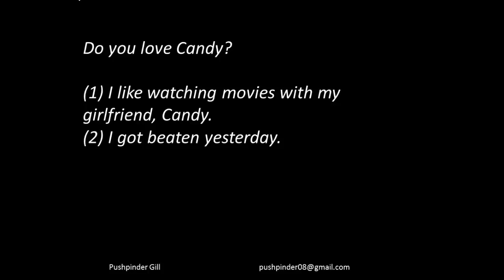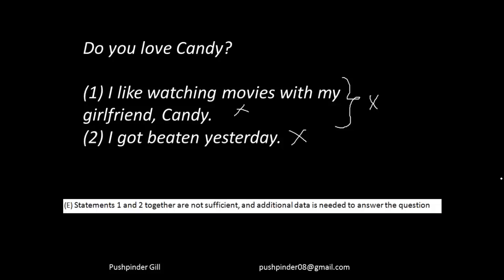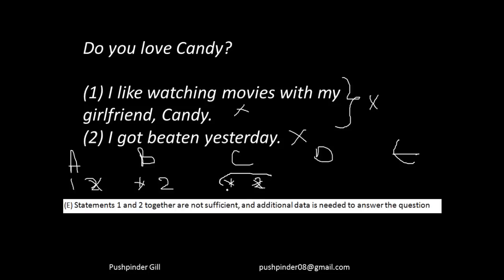Answer choice E: if the question is do you love candy, the first statement says I like watching movies with my girlfriend candy — that doesn't tell me if he loves candy. The second statement says I got beaten yesterday — it doesn't give the answer either. Even if you combine both, it doesn't give the answer. So if the first statement doesn't give you the answer, the second does not, and combining both does not, your answer is E. In summary: A — first gives you the answer, second does not. B — first does not, second does. C — neither alone, but combining gives the answer. D — both individually give the answer. E — none of them give the answer.